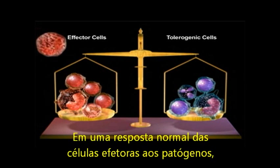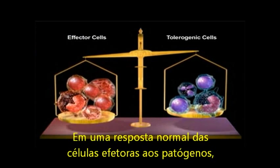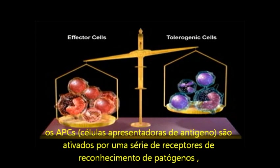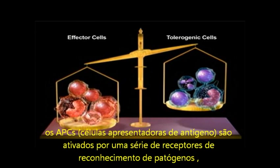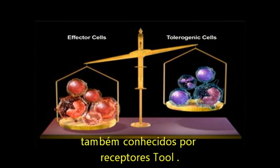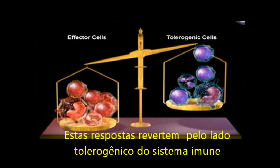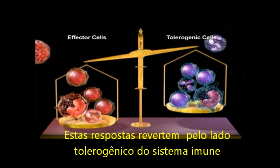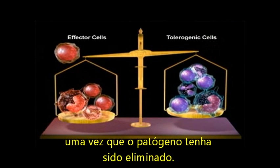In the normal effector response to pathogens, APCs are activated by a series of pathogen recognition receptors, also known as toll receptors. This response is reversed by the tolerogenic side of the immune system once the pathogen is cleared.